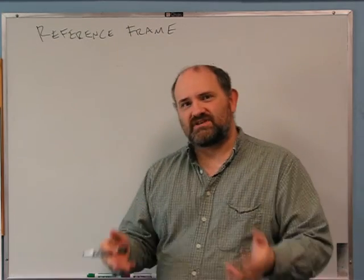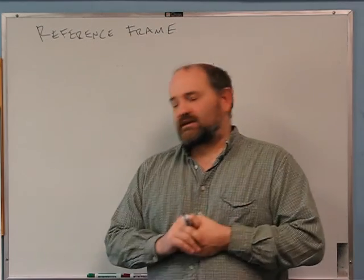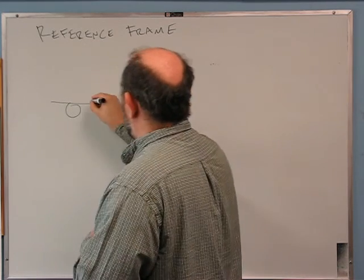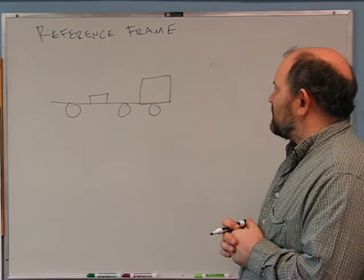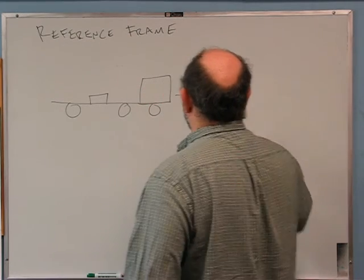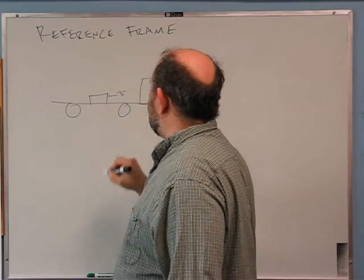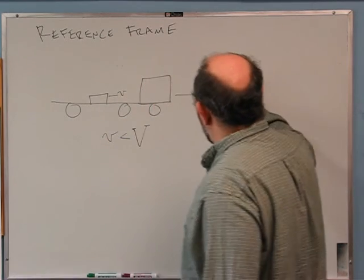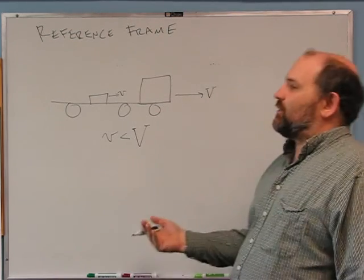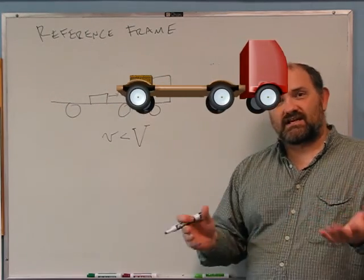A reference frame is something that you can measure positions and velocities relative to. I'm going to start with an example that showed up in one of these videos before — the crate on the flatbed truck. Suppose the truck has done some accelerating, but now the truck is moving at a constant speed V, and the crate, because of what happened in the past, is actually sliding towards the back of the truck. That means the crate is moving at some speed v where v is less than capital V. So the crate is moving forward, but at a slower speed, and eventually the crate is going to fall off the back of the truck.